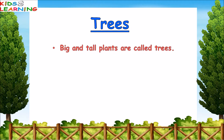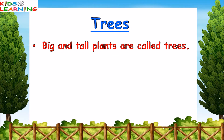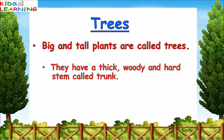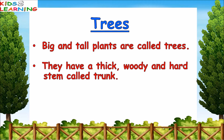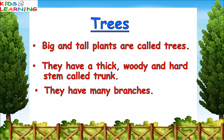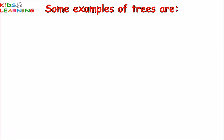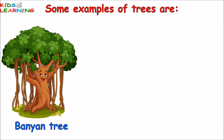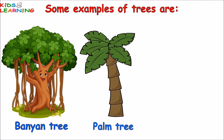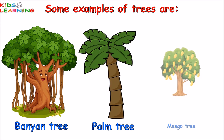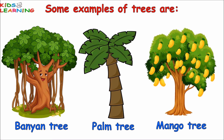Trees. Big and tall plants are called trees. They have a thick, woody and hard stem called a trunk. They have many branches. Trees live for several years. Some examples of trees are the Banyan tree, Palm tree, and Mango tree.